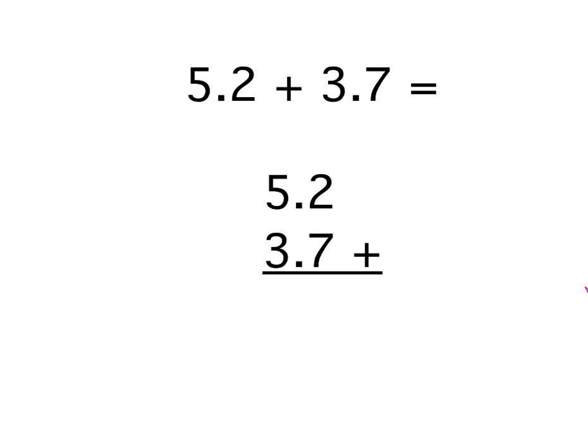Then you simply add up each column. 2 add 7 is 9. So we write the 9 down there. Then the decimal points are next. Make sure that you bring that down there and put your decimal point down there. And then 5 add 3 in this column is 8. So the answer is 8.9.